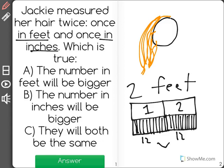So I have 12 inches in each foot, which is equal to a total of 24 inches. So if her hair is two feet long, it is 24 inches long.